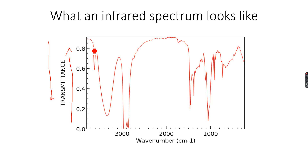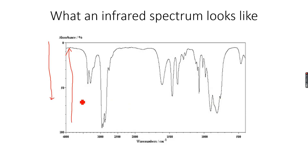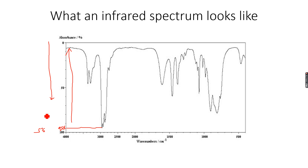This clearly shows that absorbance is the exact opposite of transmittance. For example, if a peak is absorbing close to 95 percent, the transmittance will be around 5 percent. So the greater the absorbance, the lower the transmittance, and the lower the absorbance, the greater the transmittance.